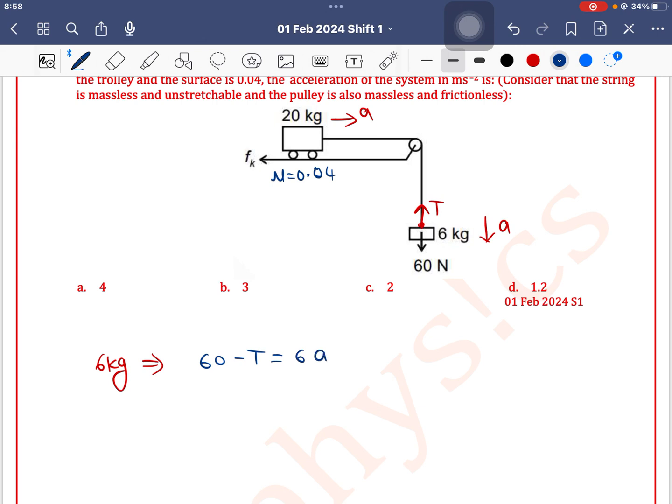And if we write equation for 20 kg, the force acting on the right side is tension and left side it is friction. So tension minus Fk is equal to mass into acceleration. What is the value of Fk?